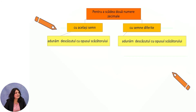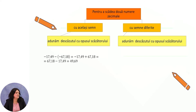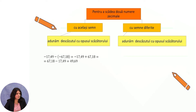To subtract two decimal numbers, we add the opposite of the subtrahend to the minuend. For example, minus 17.49 minus minus 67.18: the first number remains unchanged (minus 17.49), and instead of subtracting minus 67.18, we add its opposite, plus 67.18. We now have addition of two numbers with different signs. Applying the rule — subtract the smaller absolute value from the larger — from 67.18 we subtract 17.49 and assign the positive sign. The result is 49.69.